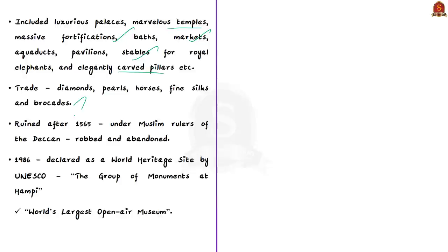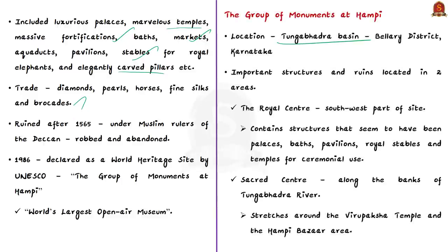The site is located in the Tungabhadra Basin in the Ballari District of Karnataka. Most of the important sculptures and ruins are located in two areas: the Royal Centre and the Sacred Centre. The Royal Centre is in the southwest part of the site and contains structures that appear to have been palaces, baths, pavilions, royal stables, and temples for ceremonial use. The Sacred Centre is along the banks of the holy Tungabhadra River and stretches around the Virupaksha Temple and the Hampi Bazaar area.